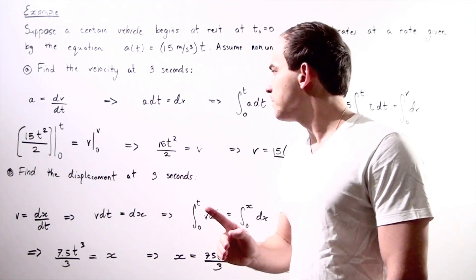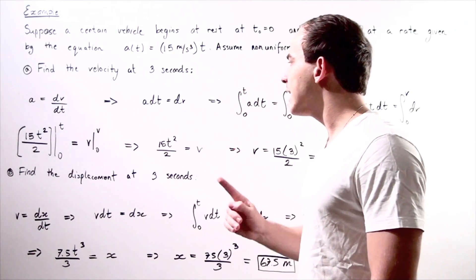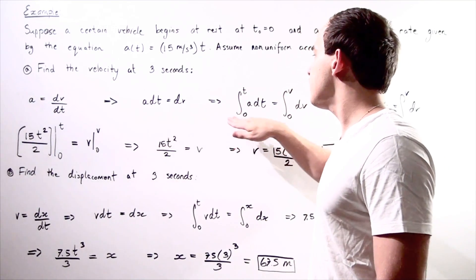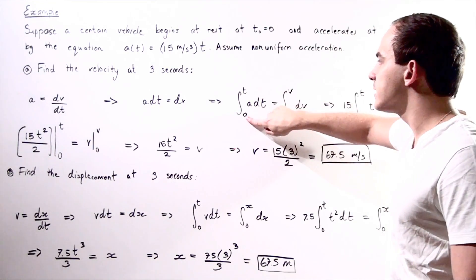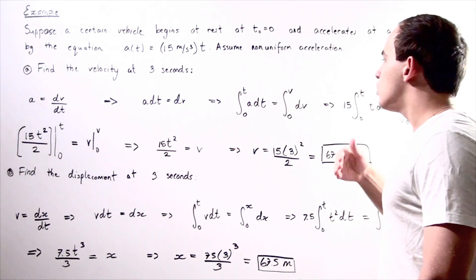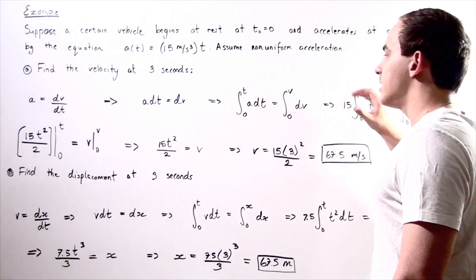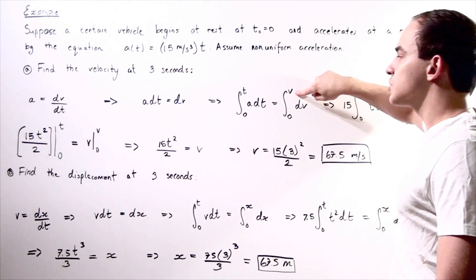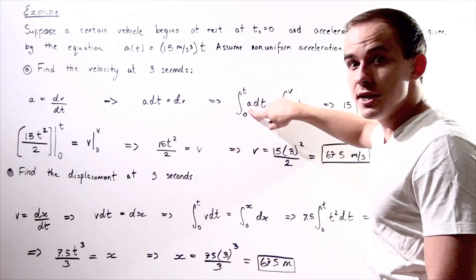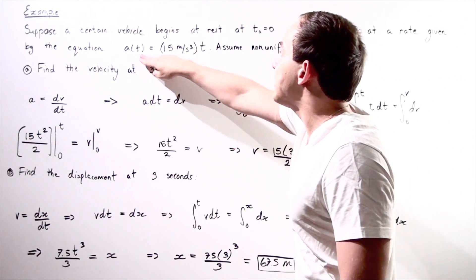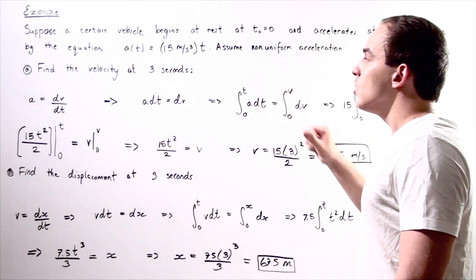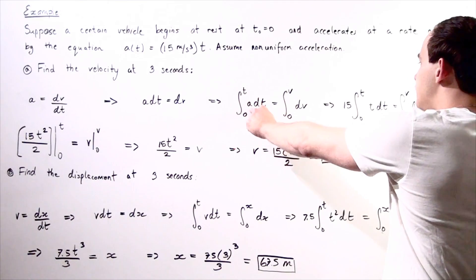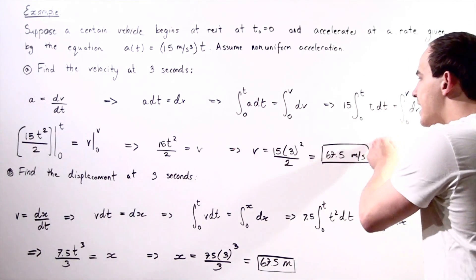Now let's take the definite integral of both sides, which will allow us to find our velocity equation. On the left side, we integrate from time zero to final time t. On the right side, we integrate from velocity zero — because our car began at rest — to final velocity v. We replace the acceleration term a with 15t, and since 15 is a constant, we take it outside the integral.